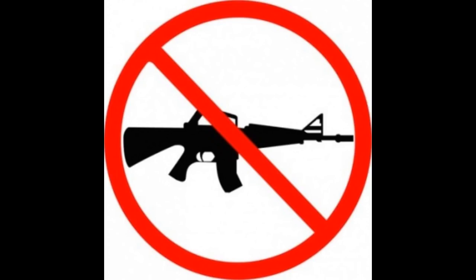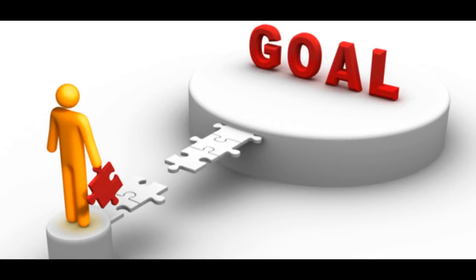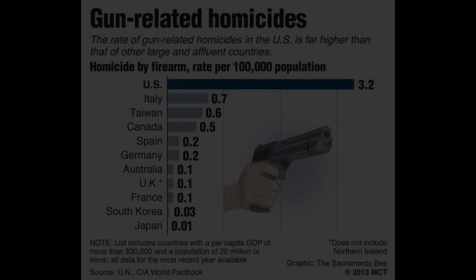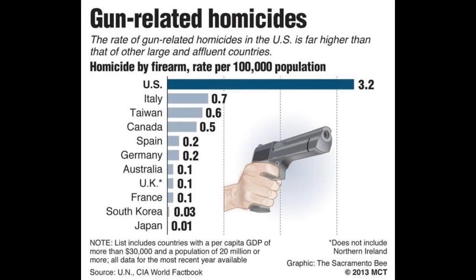Given this, the question remains: should assault weapons described under the 1994 assault weapons ban be banned? In order to answer this question, we need to ask what we are expecting to achieve. In any discussions about gun control, the only meaningful outcome would be to decrease the number of gun-related deaths in America.